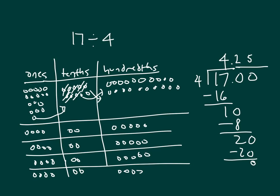And so our number within each of these groups is 4 ones, 2 tenths, 5 hundredths. So the same answer as we got when we were using our numbers.